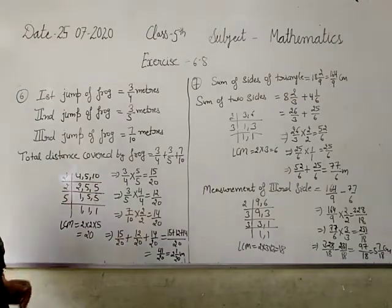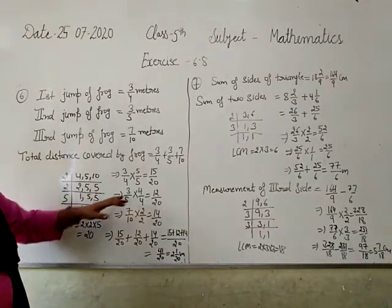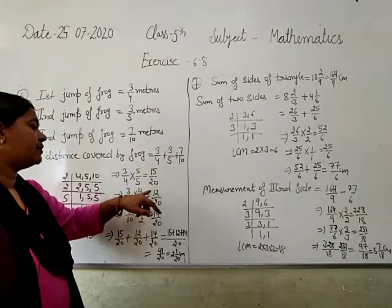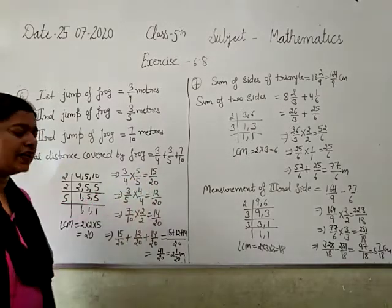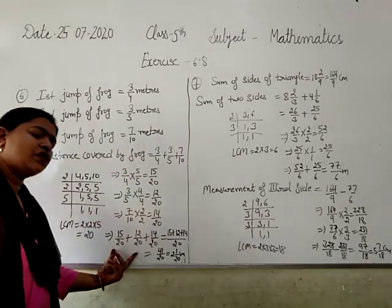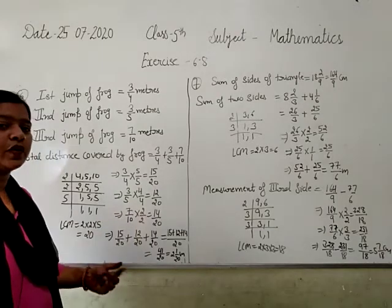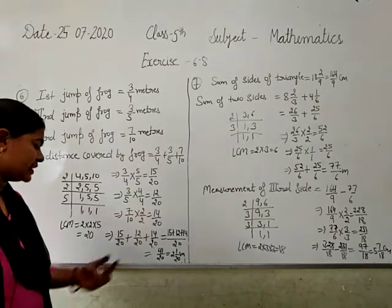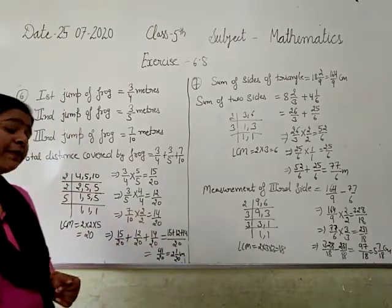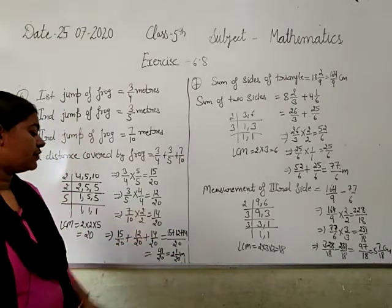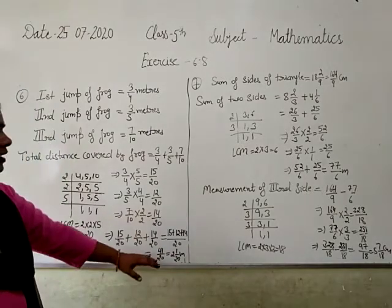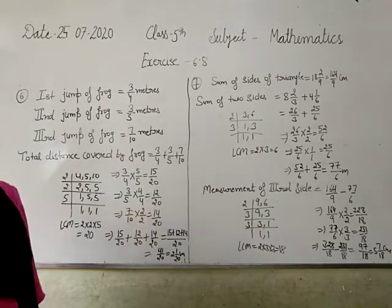First we find LCM. LCM is 20. And make like fractions - 15 by 20, 12 by 20, and 14 by 20. We add this fraction. Add the numerators, keep denominator as is: 15 plus 12 plus 14 divided by 20. The answer is 41 by 20, which equals 2 and 1 by 20 meters. Convert improper to mixed fraction.